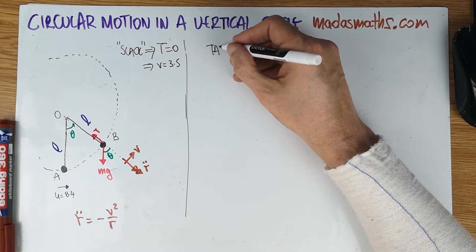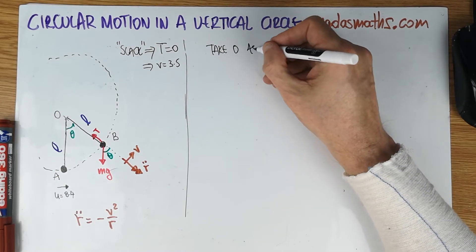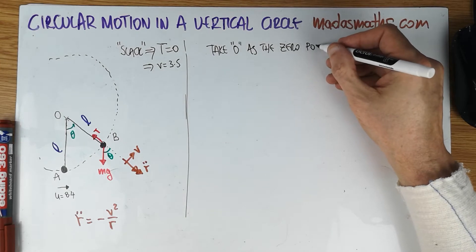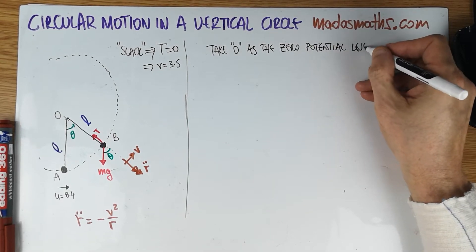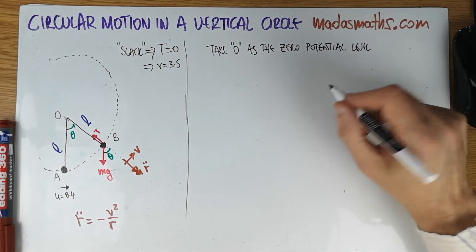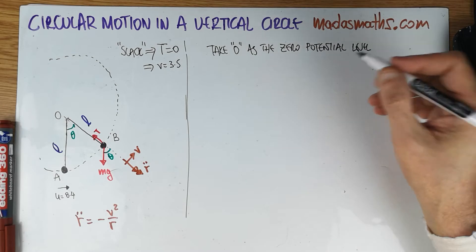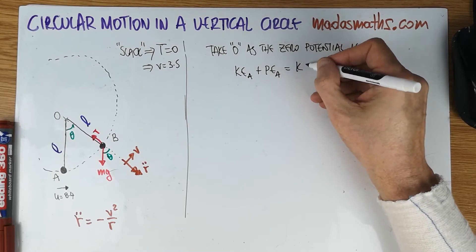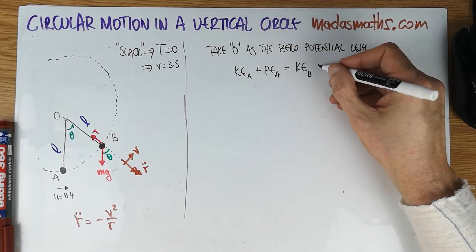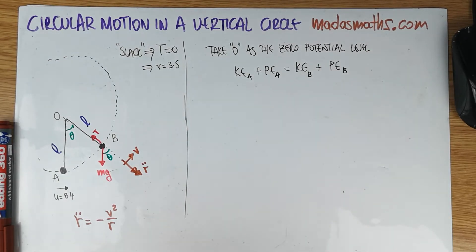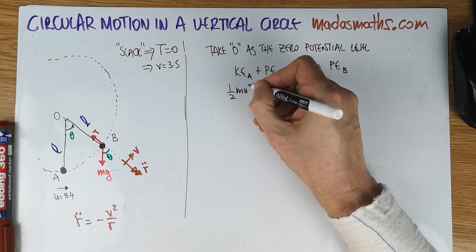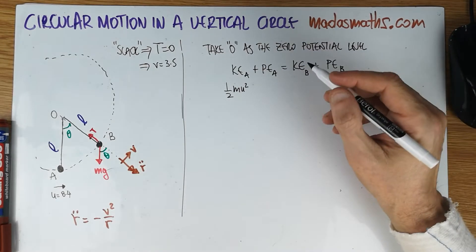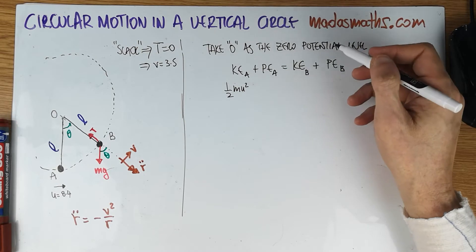So, take, we need a zero potential level. Take O, the point O, as the zero potential level, gravitational, of course. I'm going to ignore elastic energies. There's no elastic energy in the problem. I'm going to ignore work in and work out. So that's simply kinetic energy at A plus potential energy at A is equal to kinetic energy at the point B, the arbitrary position, plus potential energy at B.